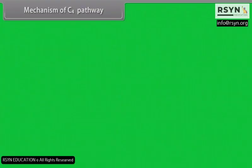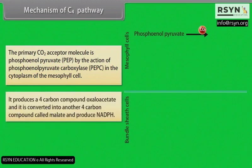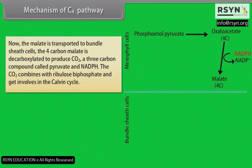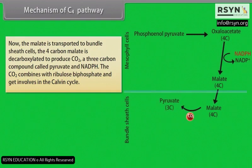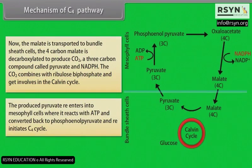In the C4 pathway, the primary CO2 acceptor is phosphoenolpyruvate (PEP). In the cytoplasm of mesophyll cells, PEP carboxylase acts on CO2 to produce the 4-carbon compound oxaloacetate, which is converted to another 4-carbon compound, malate, producing NADPH. The malate is transported to bundle sheath cells, where it is decarboxylated to produce CO2, the 3-carbon compound pyruvate, and NADPH. The released CO2 enters the Calvin cycle by combining with RuBP. The pyruvate re-enters the mesophyll cells, reacts with ATP, is converted back to PEP, and re-initiates the C4 cycle.